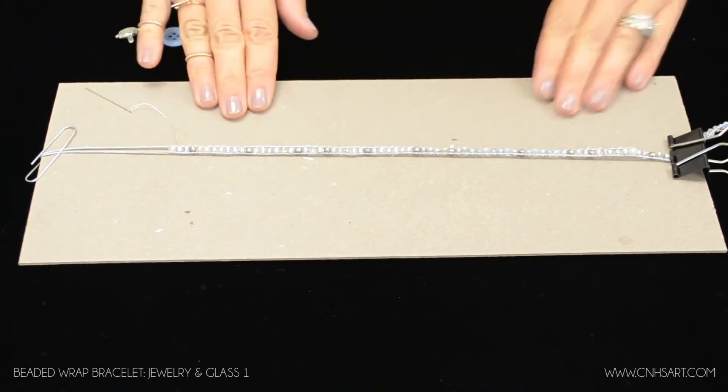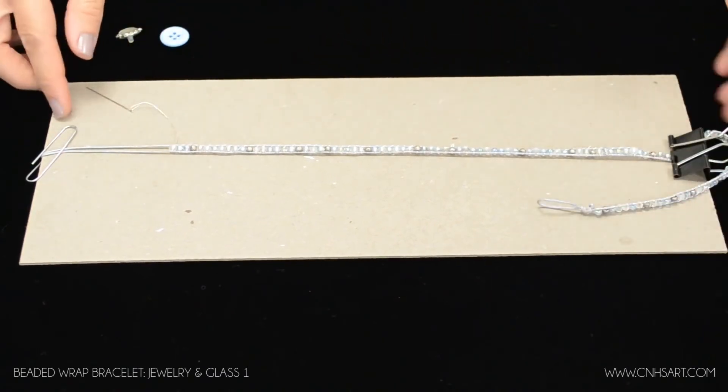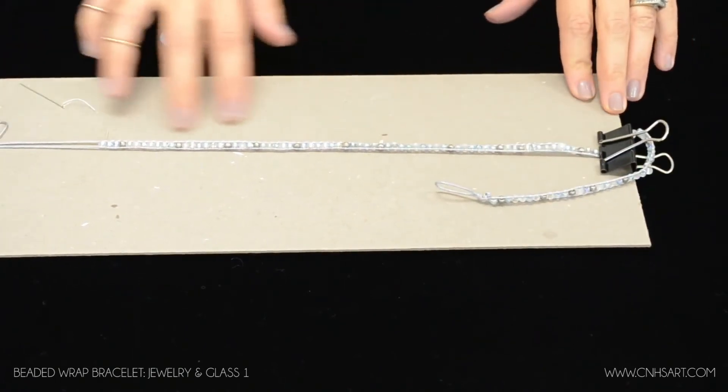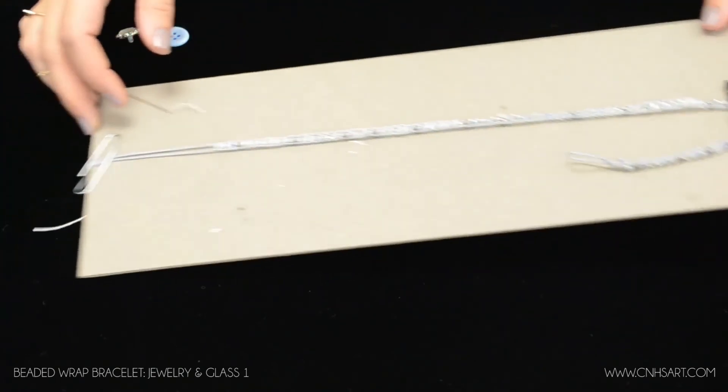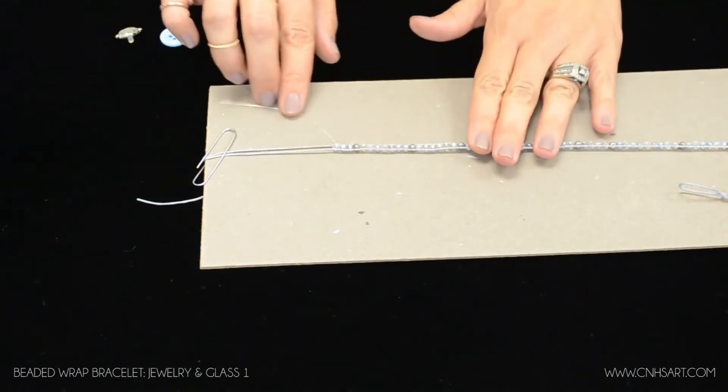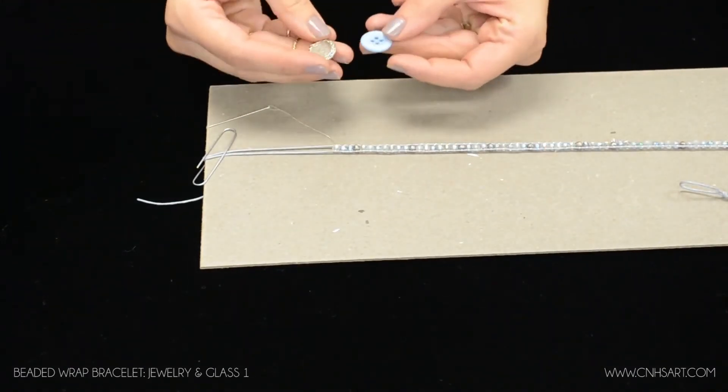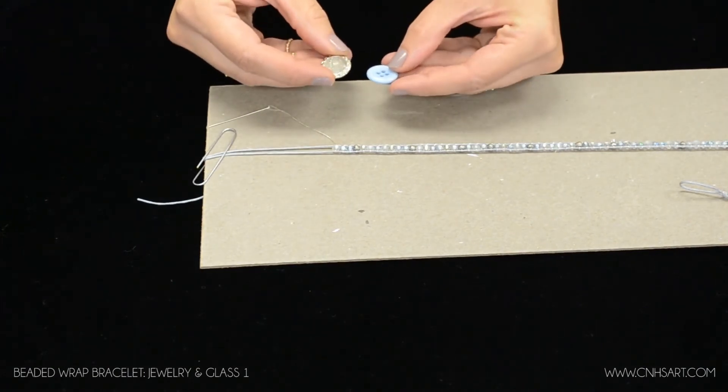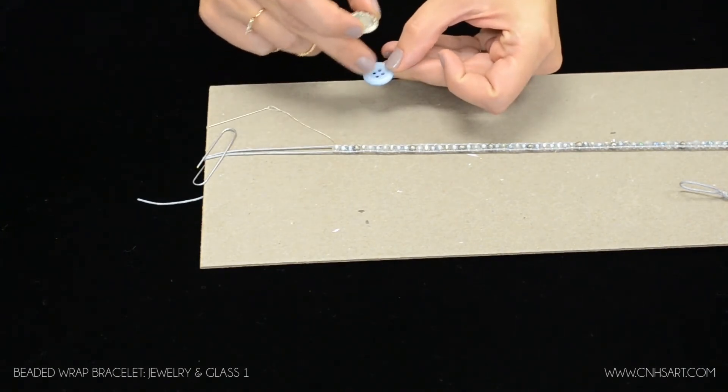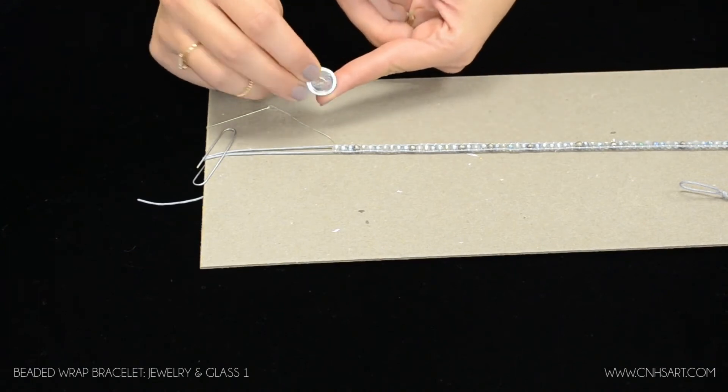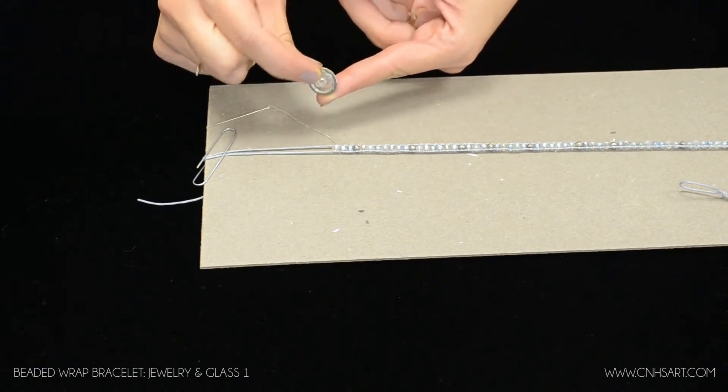Now that we have the bracelet finished up and I checked to make sure that it would go around my wrist three times, I am going to show you how to finish the end. So there's two different types of buttons you could be using for this. There is the one standard button with the four holes in it. Or this button here that has the loop on the back which is actually what we're going to use.